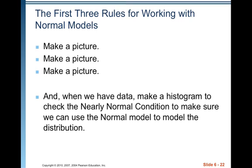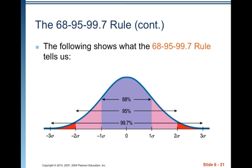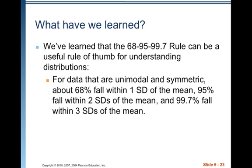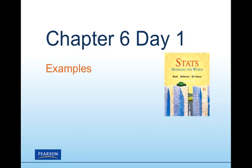The first three rules for working with normal models are: make a picture, make a picture, make a picture. You're going to learn how to draw that normal model — sketch it — and you'll be able to do it in your sleep. When we have data, make a histogram, stem plot, or dot plot to check the nearly normal condition. So what have we learned? The 68-95-99.7 rule is a useful rule of thumb: for unimodal and symmetric data, about 68 percent fall within one standard deviation, 95 percent within two, and 99.7 percent within three standard deviations of the mean. When you come back for video two, we'll go over some examples.